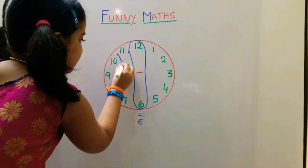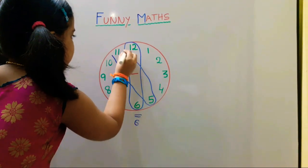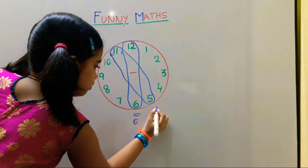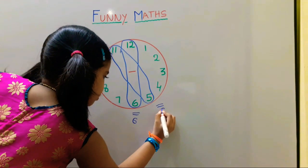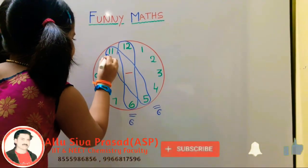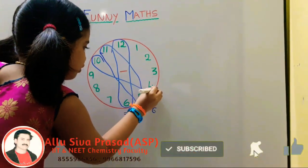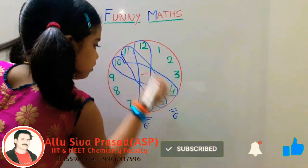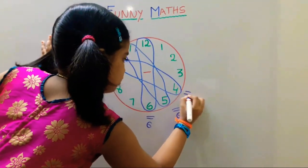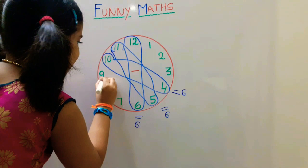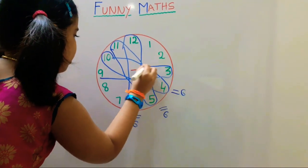11 minus 5 is equal to 6. 10 minus 4 is equal to 6. 9 minus 3 is equal to 6.